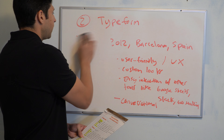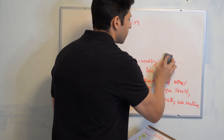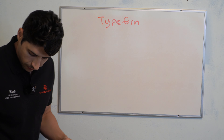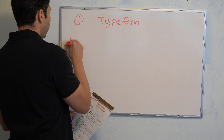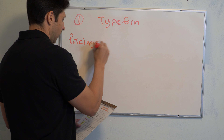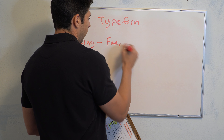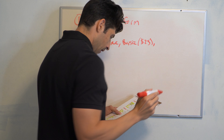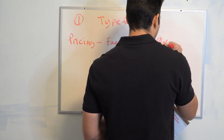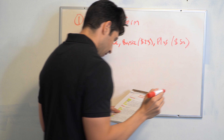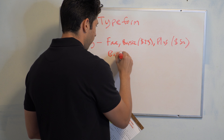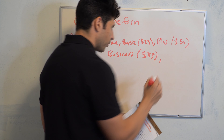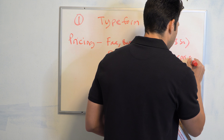I forgot to go through pricing for HubSpot forms earlier, so I'll cover Typeform's pricing here. They have a free plan, a basic plan at $25 per month, a Plus at $50 per month, Business at $83 per month, and lastly Enterprise which is custom pricing depending on what you're looking for.